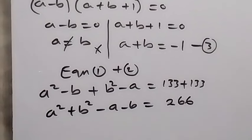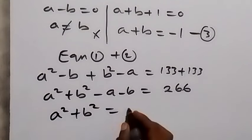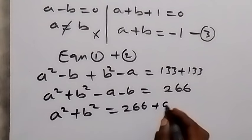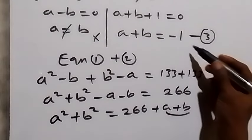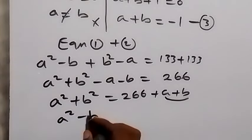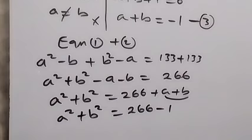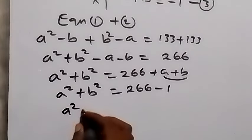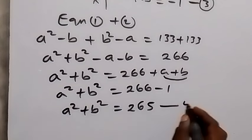Taking minus a minus b to the other side, it becomes plus a plus b. So a squared plus b squared equals 266 plus (a plus b). From equation 3, a plus b is minus 1, so substituting: a squared plus b squared equals 266 minus 1, which gives us a squared plus b squared equals 265. Let's call this equation 4.